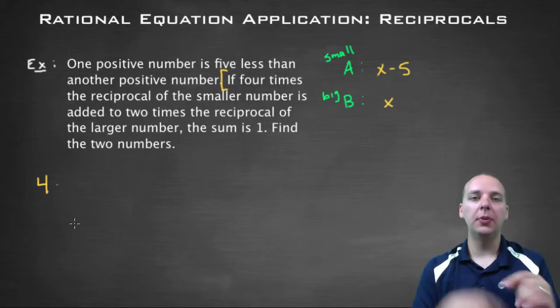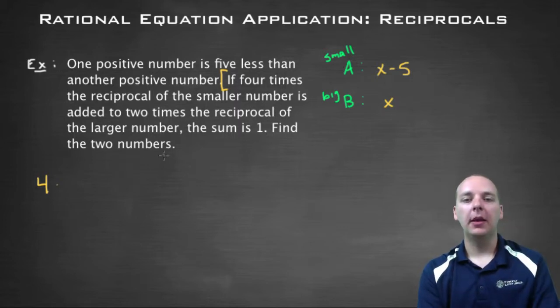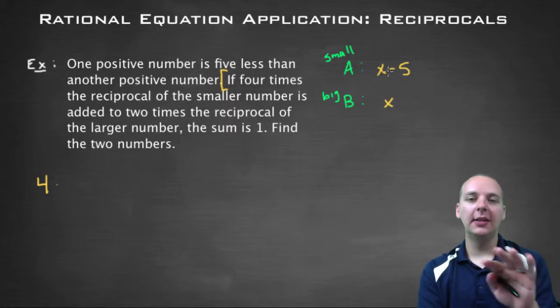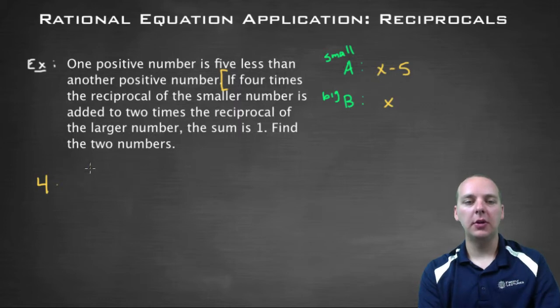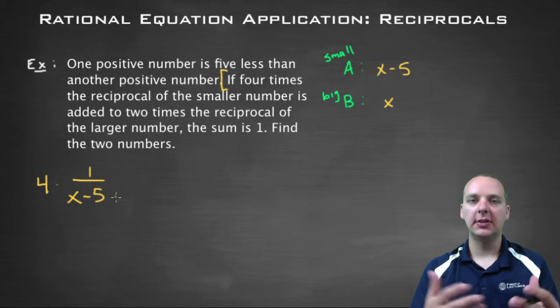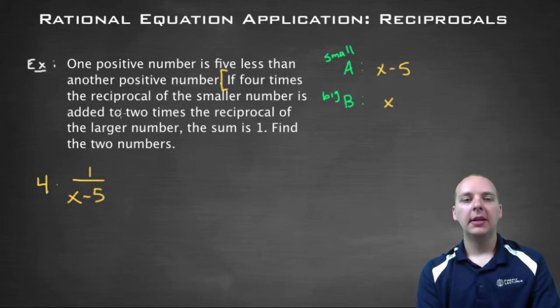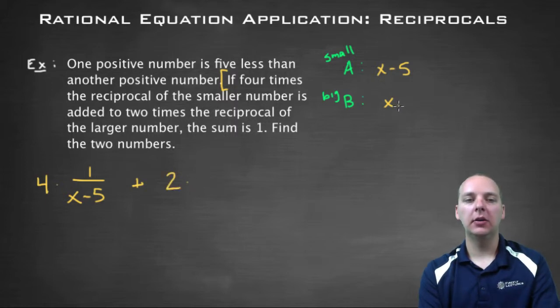Remember the reciprocal means you flip, flip the term, and so X minus five would be in the denominator. Four times the reciprocal of the smaller number, so that would be one over X minus five as opposed to just X minus five, is added to two times the reciprocal of the larger number, so the reciprocal of the larger number is one over X, two times that, the sum of those two is equal to one.